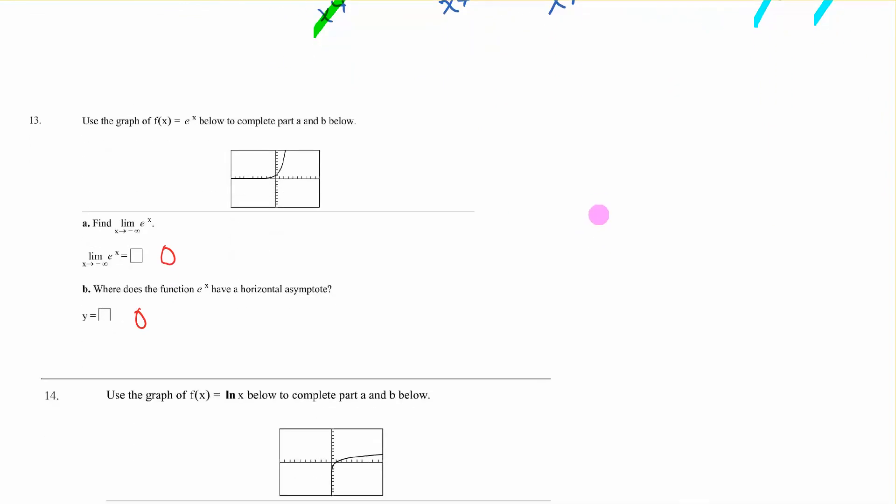Number 13. This is a graph of e to the x. The limit as x approaches negative infinity. So we're going along here. What does it appear that we are approaching? A y value of 0. Where does the function have a horizontal asymptote? Well, if that's a boundary that it's approaching but never reaching, that's going to be the horizontal asymptote. So that would be 0.